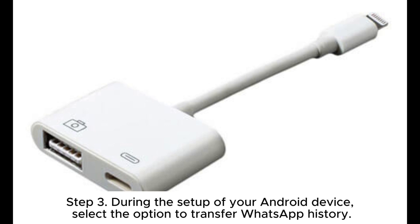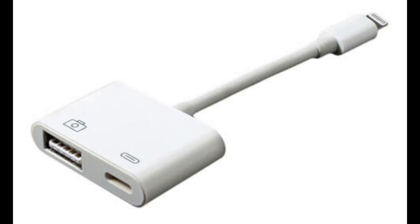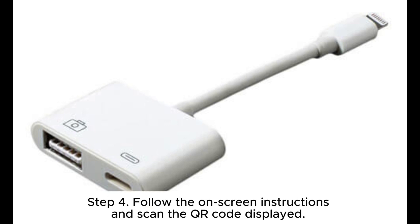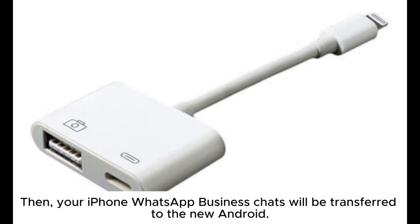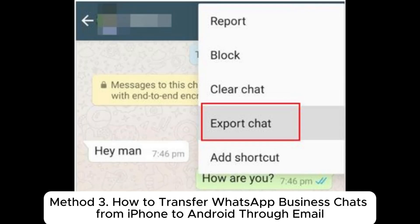Step 3: During the setup of your Android device, select the option to transfer WhatsApp history. Step 4: Follow the on-screen instructions and scan the QR code displayed. Then your iPhone WhatsApp Business chats will be transferred to the new Android.